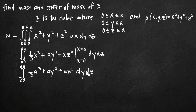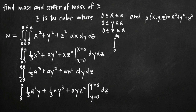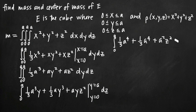Now we integrate with respect to y, treating x and z as constants. We get 1/3 a cubed y plus 1/3 a y cubed plus a y z squared, evaluated on the interval y equals 0 to y equals a. Plugging in a for y: a cubed times a is a to the fourth, giving 1/3 a to the fourth; similarly plus 1/3 a to the fourth; and for the third term, a times a is a squared, giving plus a squared z squared. Plugging in y equals 0 gives 0 for each term.